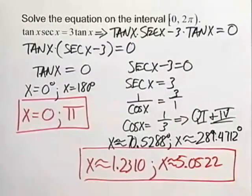So we now have the four solutions to this trig equation between 0 and 2 pi radians.